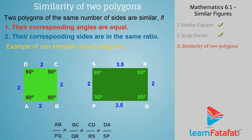But the ratio of sides AB divided by PQ, BC divided by QR, CD divided by RS, and DA divided by SP is not equal.